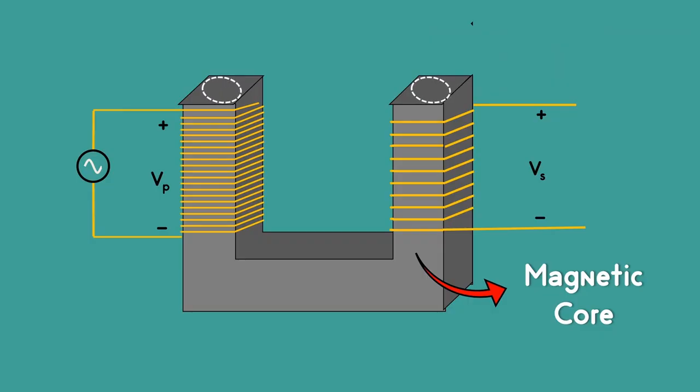We only need current to flow through the windings. We don't want any current to flow in the core. Energy will be lost to eddy currents and results in heating the core.